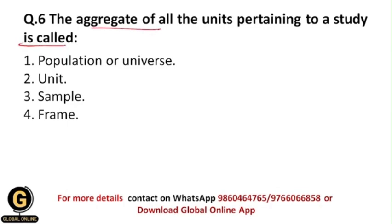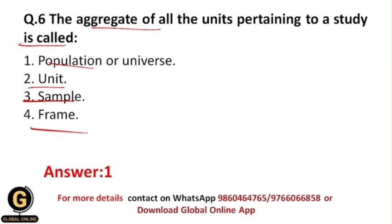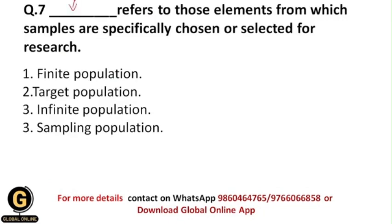Next: The aggregate of all the units pertaining to a study is called — population or universe, unit, sample, or frame? The correct answer is population or universe, because the population or universe comprises all the units relevant to a research study. When you aggregate all these units together, they form the whole population or universe.